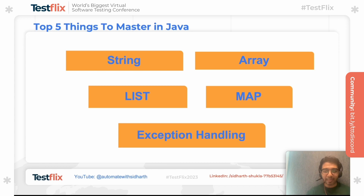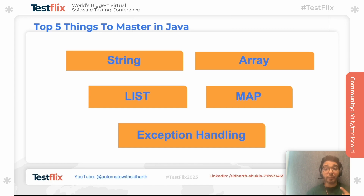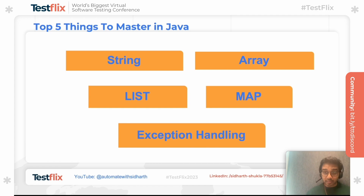For Java or any programming language, many people ask what to learn given how vast Java is. Before jumping into data structures and algorithms, make sure you are proficient in strings, arrays, lists, maps, and exception handling. Not just knowing basics — you should know every implementation of list and map: HashMap, LinkedHashMap, TreeMap, insertion order, and why to use ArrayList versus LinkedList. For exception handling, be a pro in try-catch-throws, how to put loggers inside catch, and how to use custom exceptions.